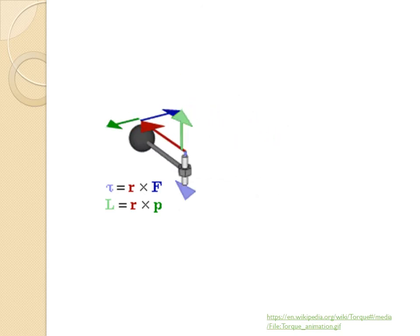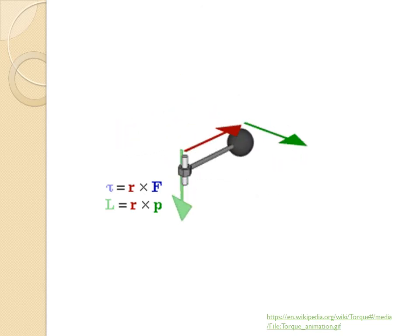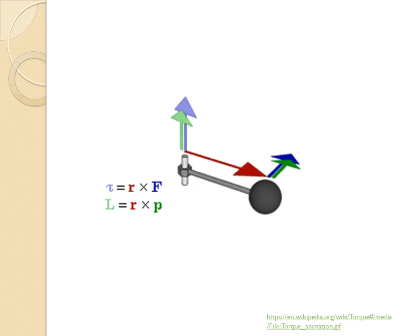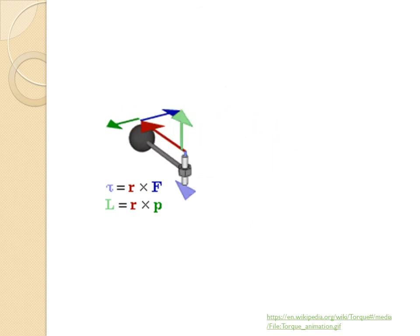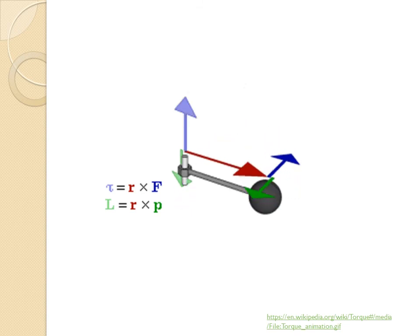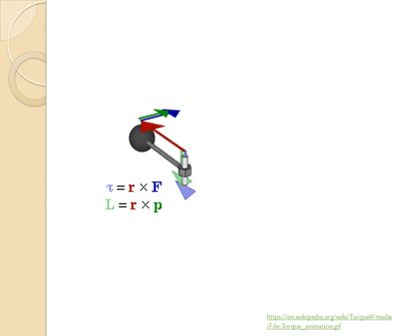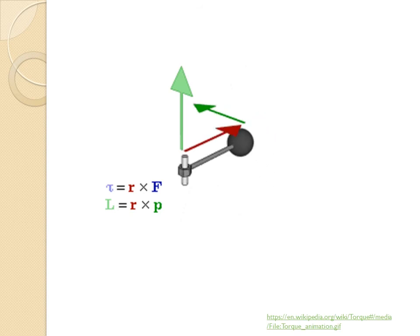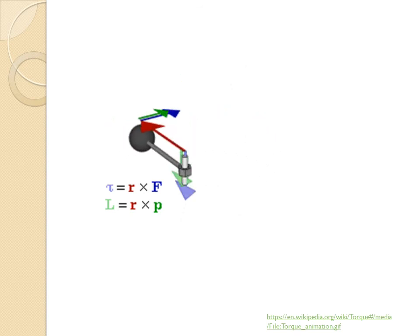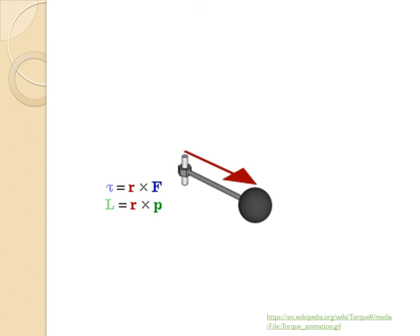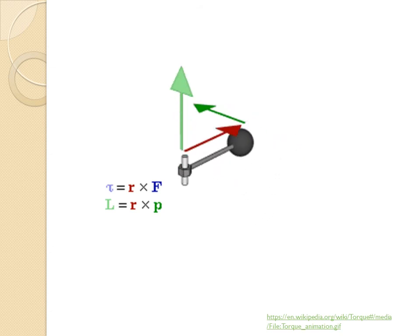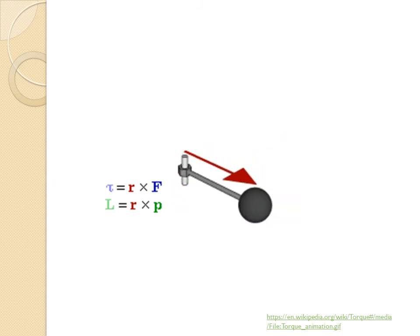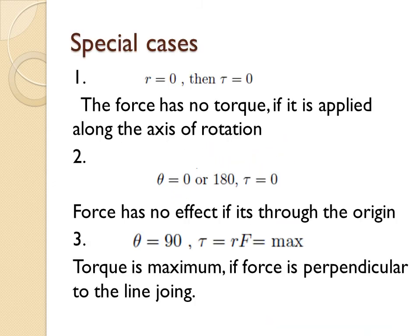This can be visualized as a screwdriver action: when rotating anticlockwise the screw comes up out of the plane, and when rotating clockwise the screw goes into the plane. This is a demonstration of the r × F torque effect.